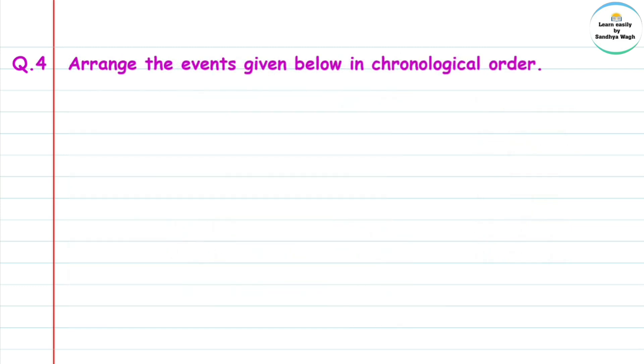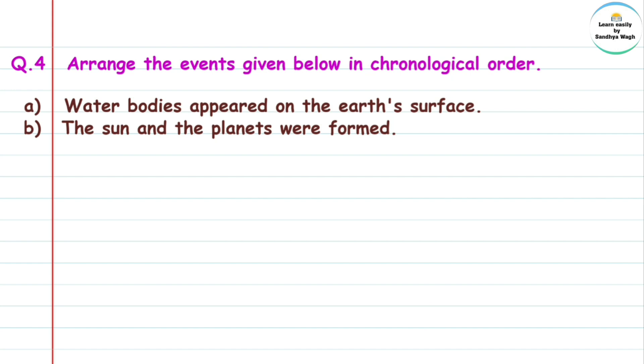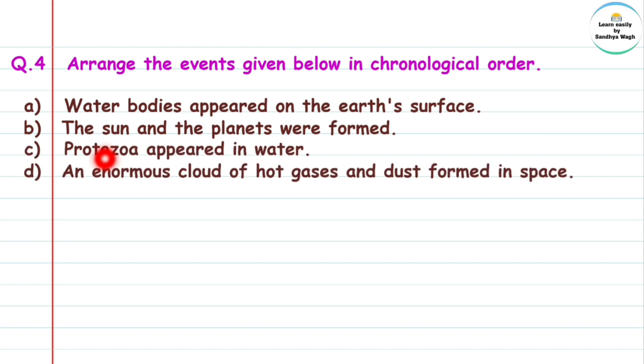Question 4: Arrange the events given below in chronological order. Chronological order means arrange in sequence. The sequence given here includes: water bodies appeared on Earth's surface, the sun and the planets were formed, protozoa appeared in water, and an enormous cloud of hot gases and dust formed in space. This sequence is given in reverse order, so we need to arrange it chronologically.